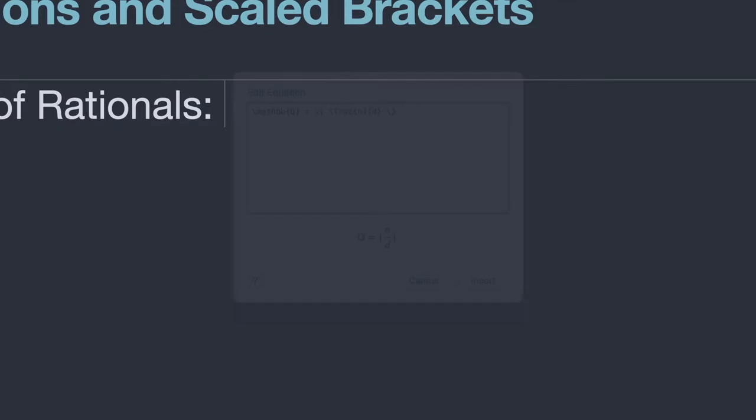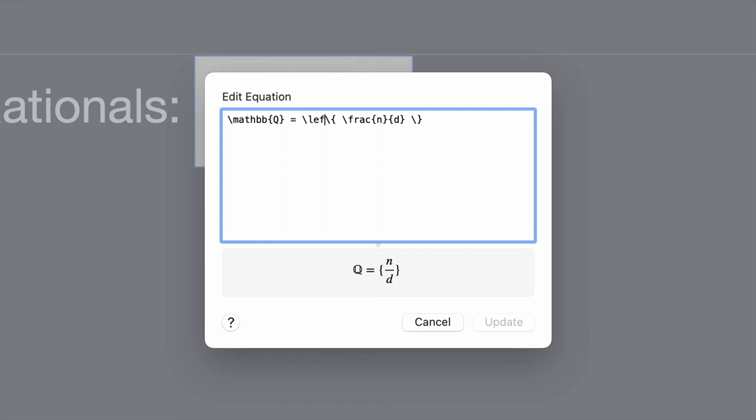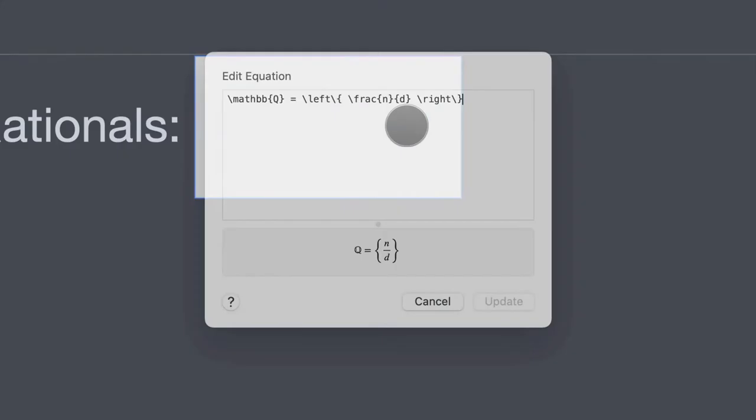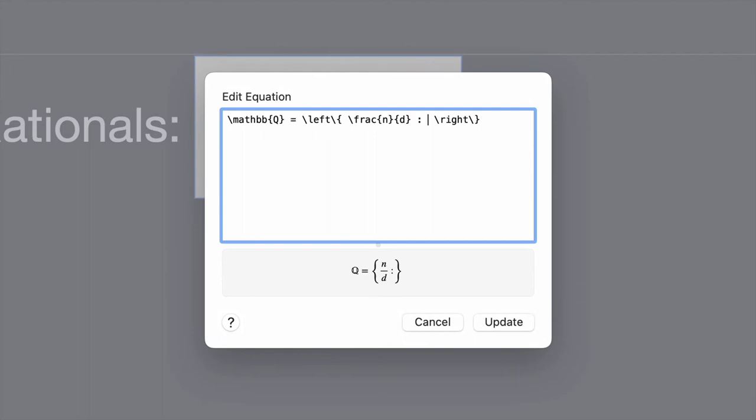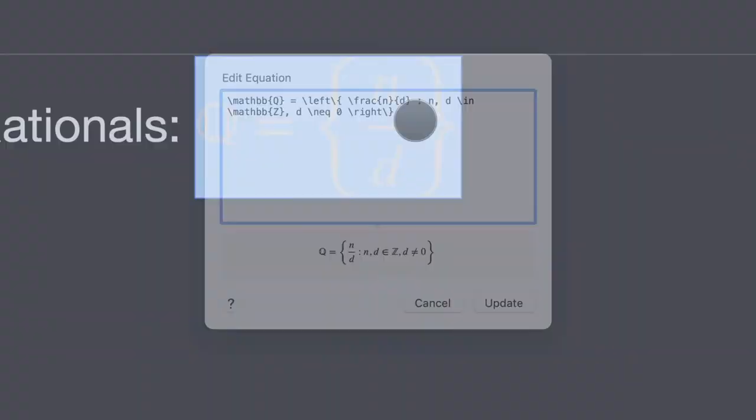But we have a problem. Our curly braces have not scaled with our fraction. In fact, this is a really noticeable beginner mistake. So let's get back in there and fix it. Now I'm going to use the left command on the opening brace and the right command on the closing brace. And that fixes everything for us. Let's go in and finish up the definition. So such that the numerator and denominator are elements of, so we use the in command there, of the set of integers. So math blackboard bold Z, and of course that denominator D cannot be equal to zero. So backslash neq for not equal to zero, and our set has been defined.